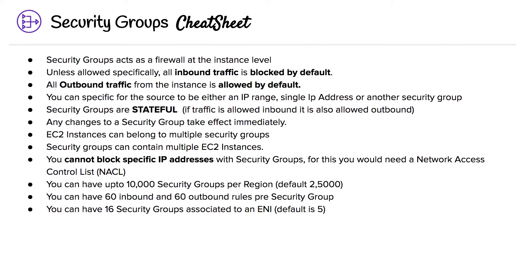Everything is deny by default — you're only allowing things. You can have up to 10,000 security groups per region; the default is 2,500. You can have 60 inbound and 60 outbound rules per security group, and you can have 16 security groups associated to an ENI; the default is five.